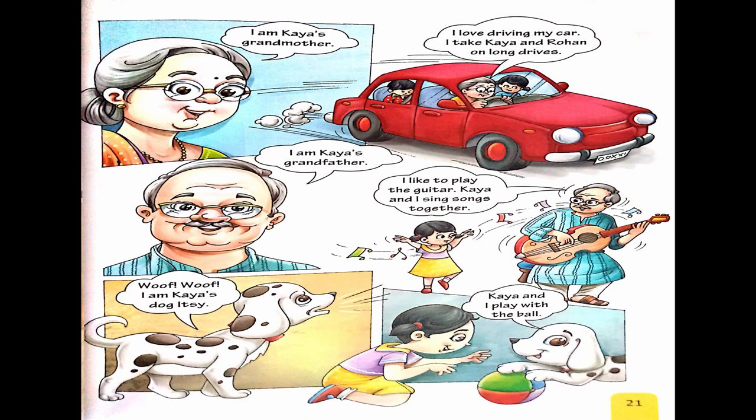'I am Kaya's dog, Itsy. Kaya and I play with the ball.' Kaya's dog's name is Itsy and they love playing with the ball together. Children, you have now read Chapter Number One. Please read the chapter nicely — tomorrow we will do the exercises based on this chapter. Wait for the next class. Till then, be safe, stay blessed. Bye-bye children!